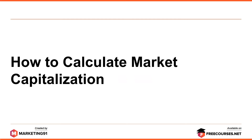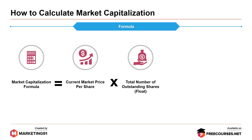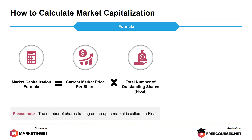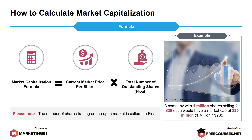How to calculate market capitalization? The formula is: current market price per share multiplied by the total number of outstanding shares — also called the float. The number of shares trading on the open market is called the float. Example: a company with 1 million shares selling for $20 each would have a market cap of $20 million — that is, 1 million shares multiplied by $20 per share.